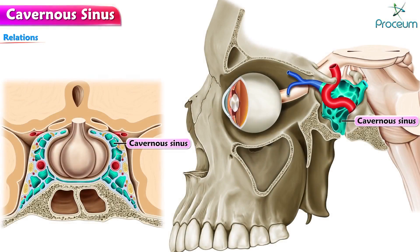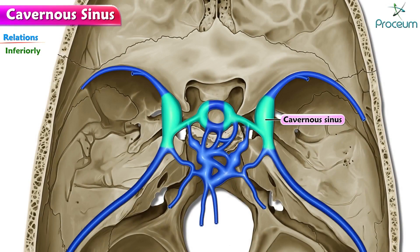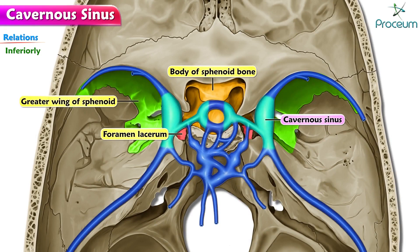Next, let's go over relations. There are numerous structures surrounding the cavernous sinus that are noteworthy. Superiorly, the structures related are the optic chiasma, optic tract, internal carotid artery, and anterior perforated substance. Inferiorly is the foramen lacerum, the junction of the body, and the greater wing of the sphenoid.